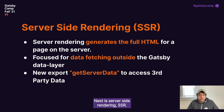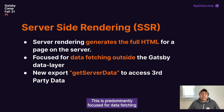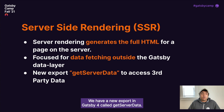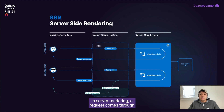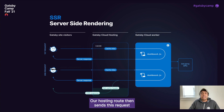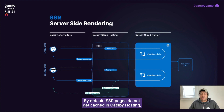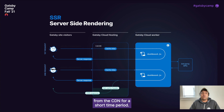Next is server-side rendering, or SSR. Server rendering generates the full HTML for a page on the server. This is predominantly focused for data fetching outside the Gatsby data layer — maybe a third-party API, something that's time-based, or maybe A/B testing. We have a new export in Gatsby 4 called GetServerData, which is used to access third-party data. In server rendering, a request comes through to Gatsby hosting and it's a cache miss. Our hosting route sends this request to a Gatsby Cloud worker, which will run the GetServerData function exported with your page component and return HTML back to the user. By default, SSR pages do not get cached in Gatsby hosting, but you can set cache headers to serve the page from the CDN for a short time period.